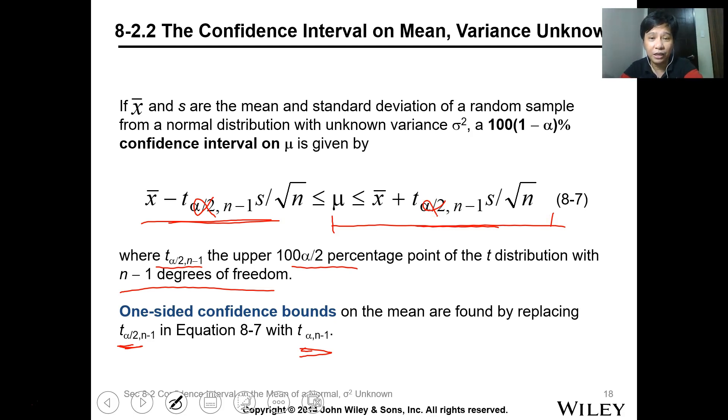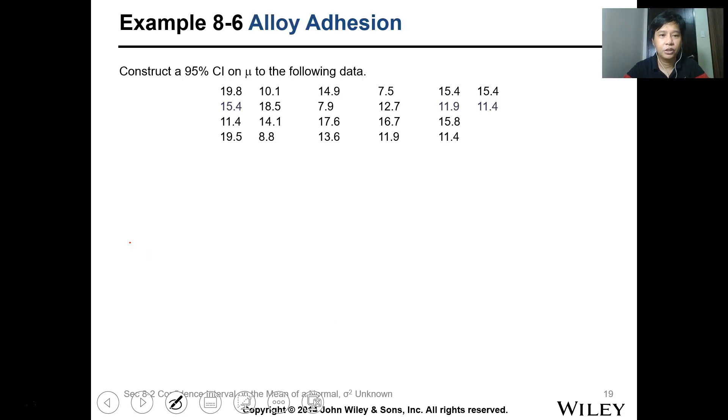What we need is alpha or alpha over 2 and n minus 1, which is the degrees of freedom. Let's have this example. Construct a 95% confidence interval on the mean of the following data. How many samples do we have? 2, 4, 4, 1, 2, 3, 4, 5, 5... so 22. So n is 22. If you get the degrees of freedom, that's 21, n minus 1. We need the x bar and the standard deviation of the sample.